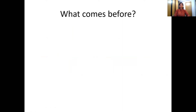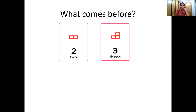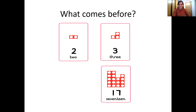Now what do we have to do? What comes before? So we have to find out which number comes before. Can you tell me which number is this? Yes, it's number 3. So which number comes before 3? Right, it's number 2. Think of the number line. After 0, 1, 2 and then 3. So 2 comes before 3. The next one. This is 17, one 10 number tile, one 7 number tile, that's number 17. So which number comes before 17? You are right, it's 16.